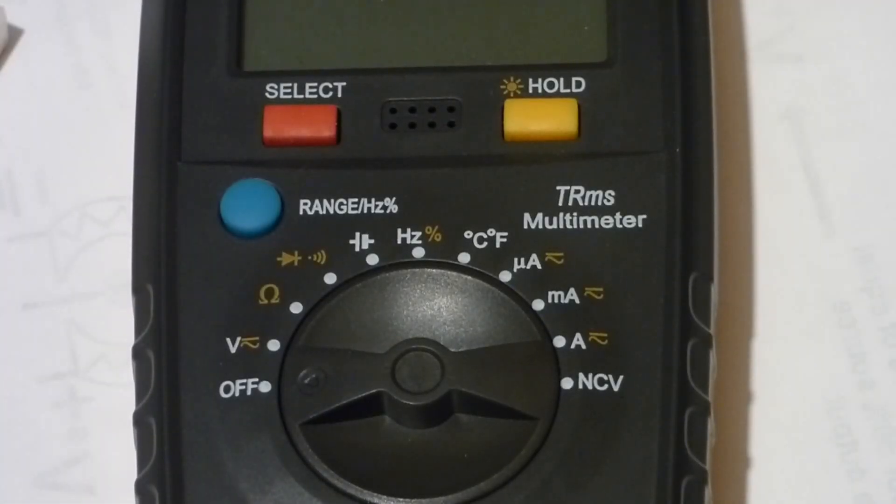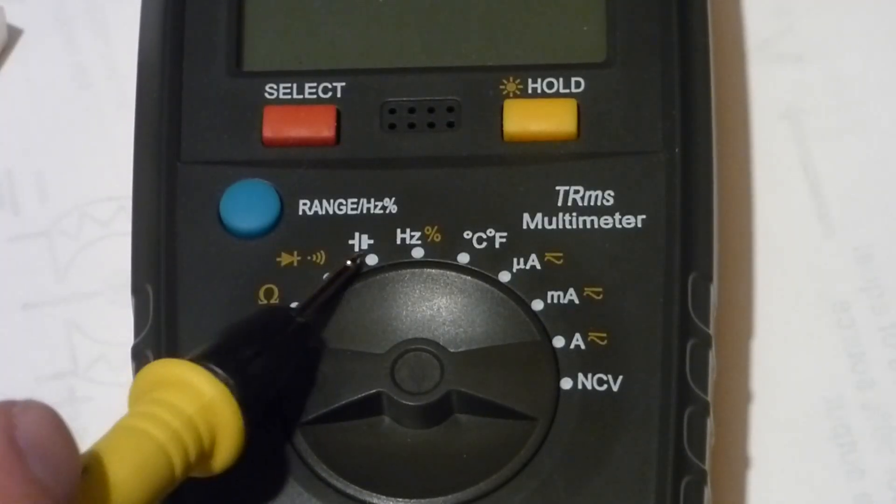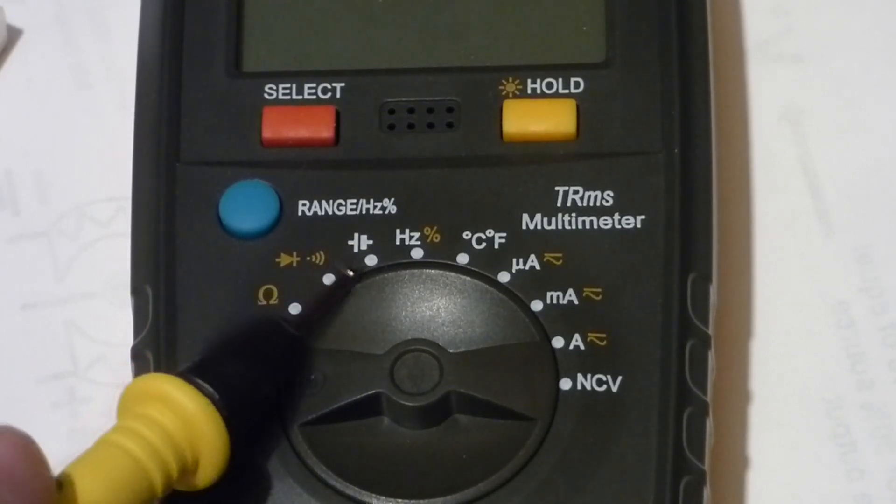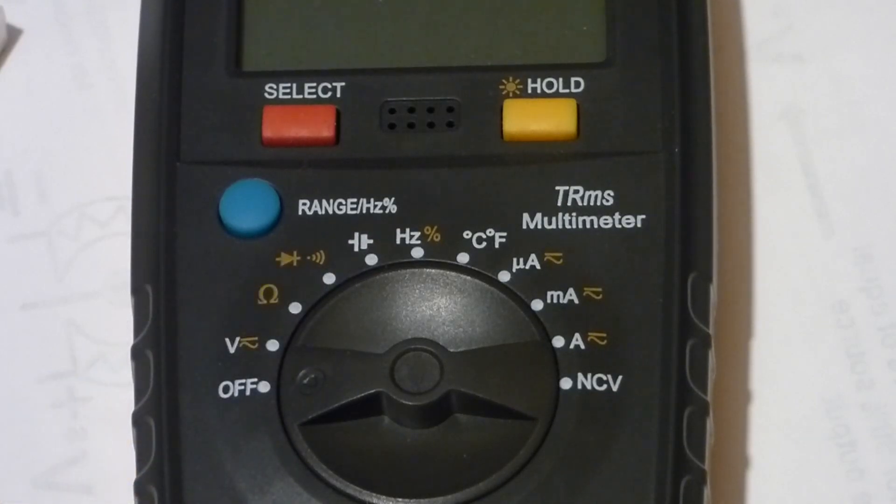One really nice feature to have on a multimeter is the ability to read capacitors, and this meter can do that. Here's a little schematic of a capacitor.